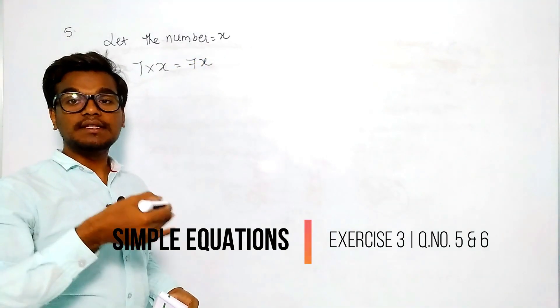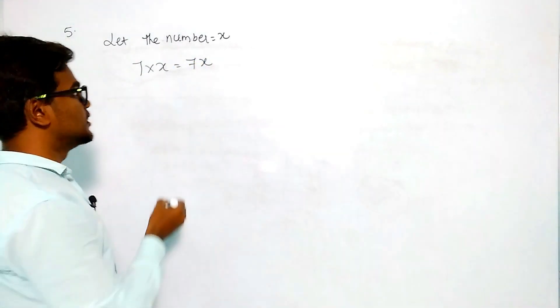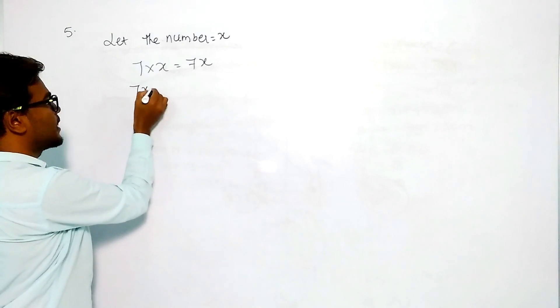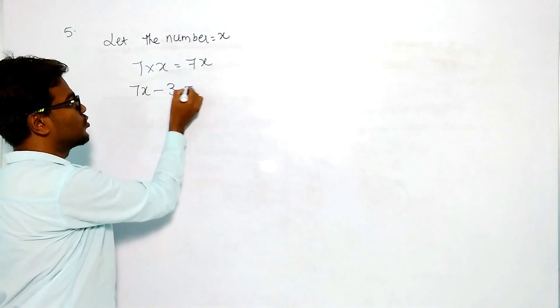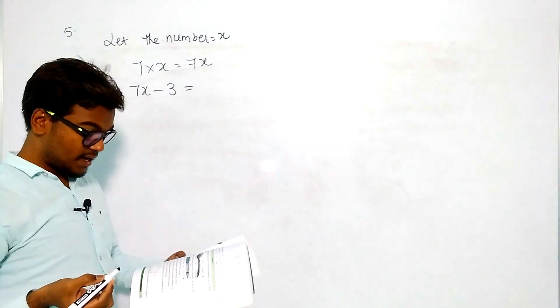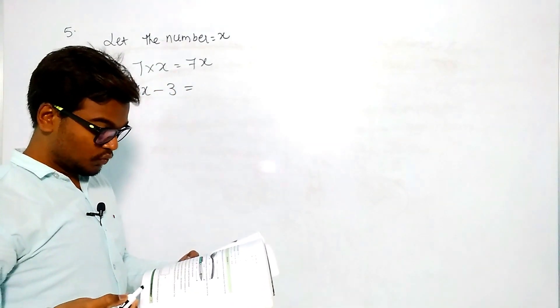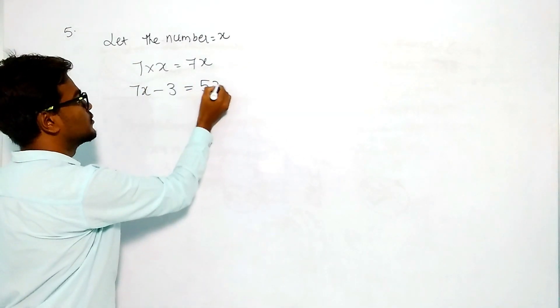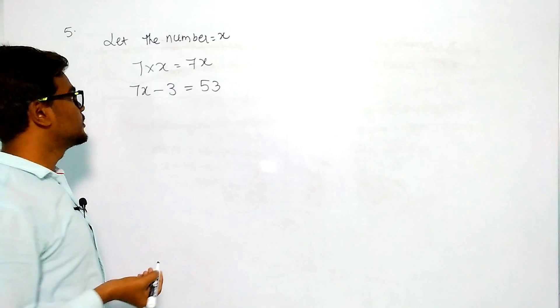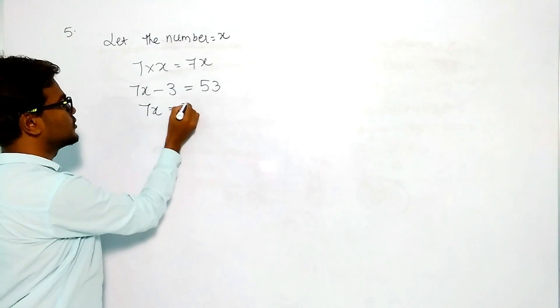Then this 7x is reduced by 3, that means 7x minus 3. Then what you will get? You will get 53. So 7x equals 53 plus 3.